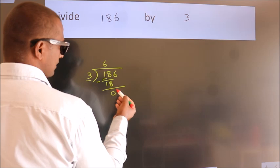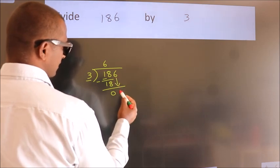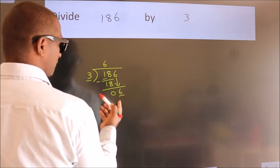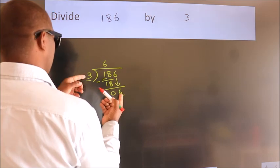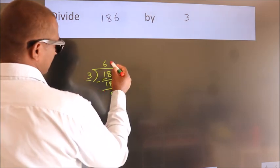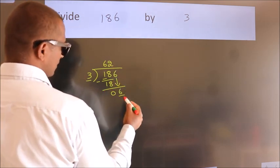After this, bring down the beside number. So 6 down. So 6. When do we get 6? In 3 table. 3 times 2, 6.